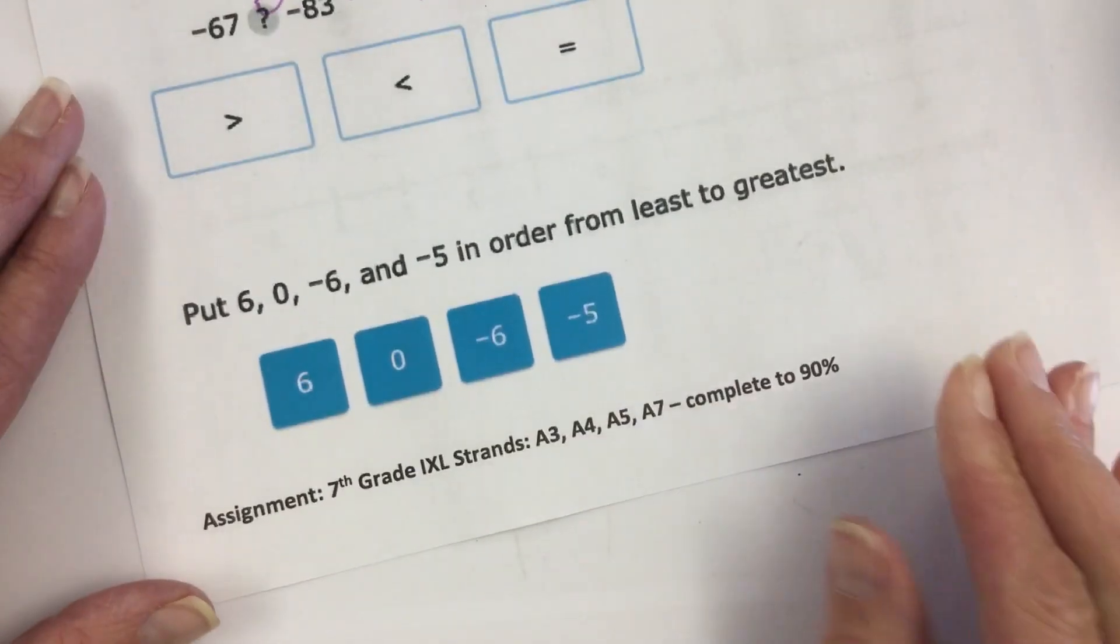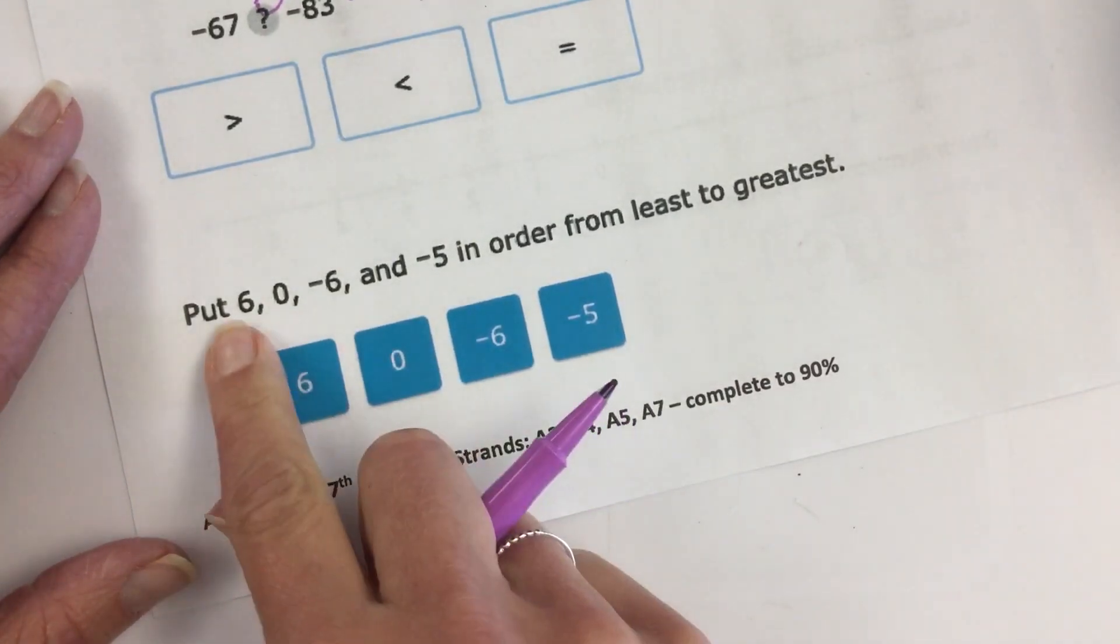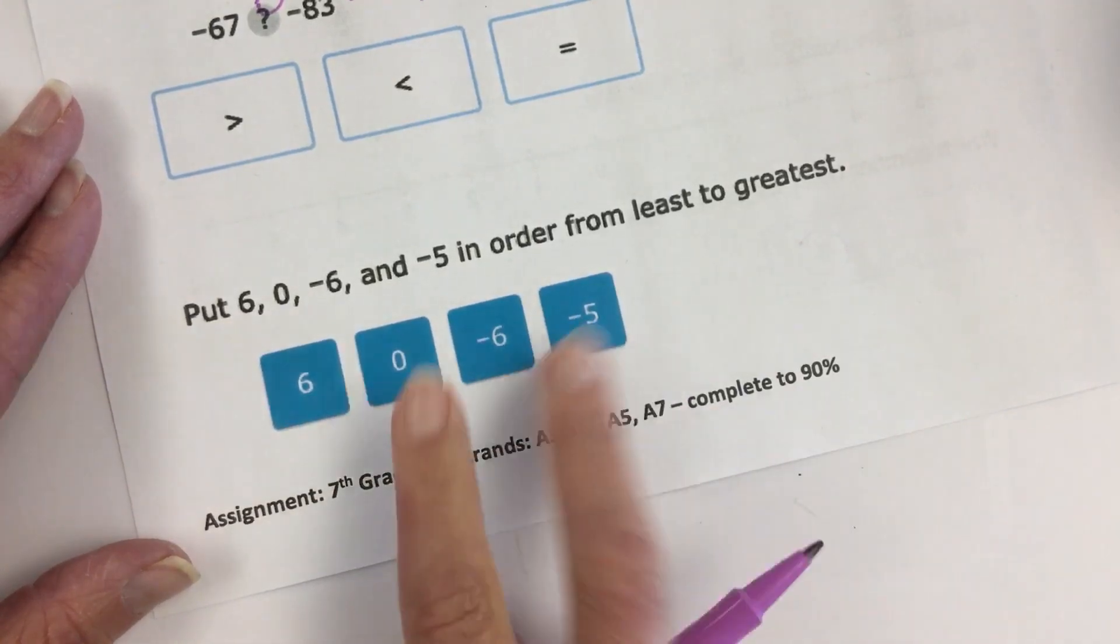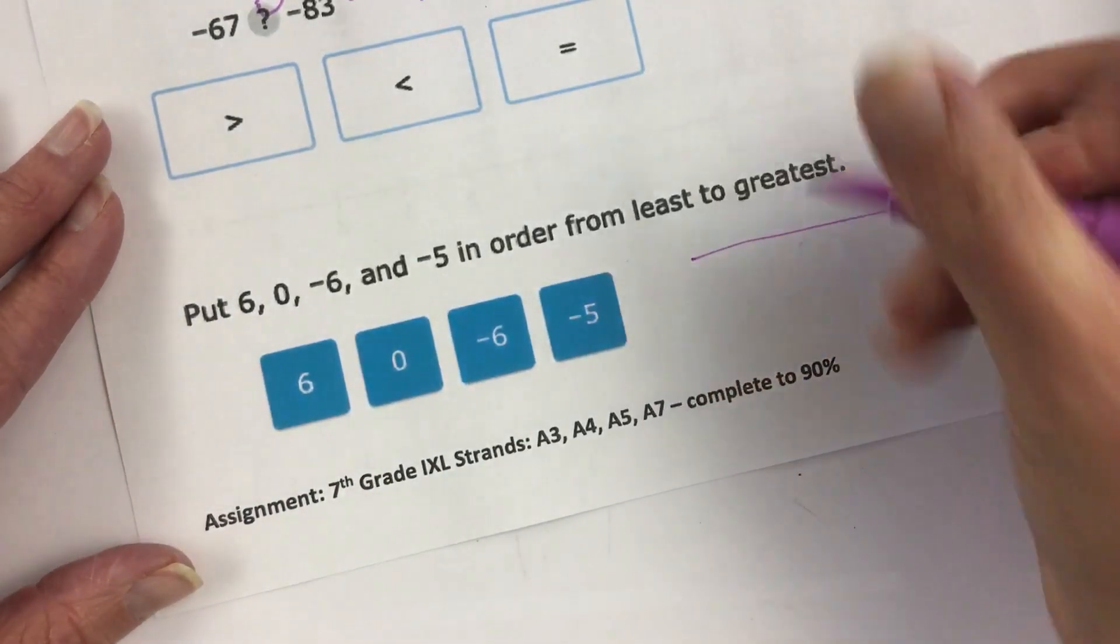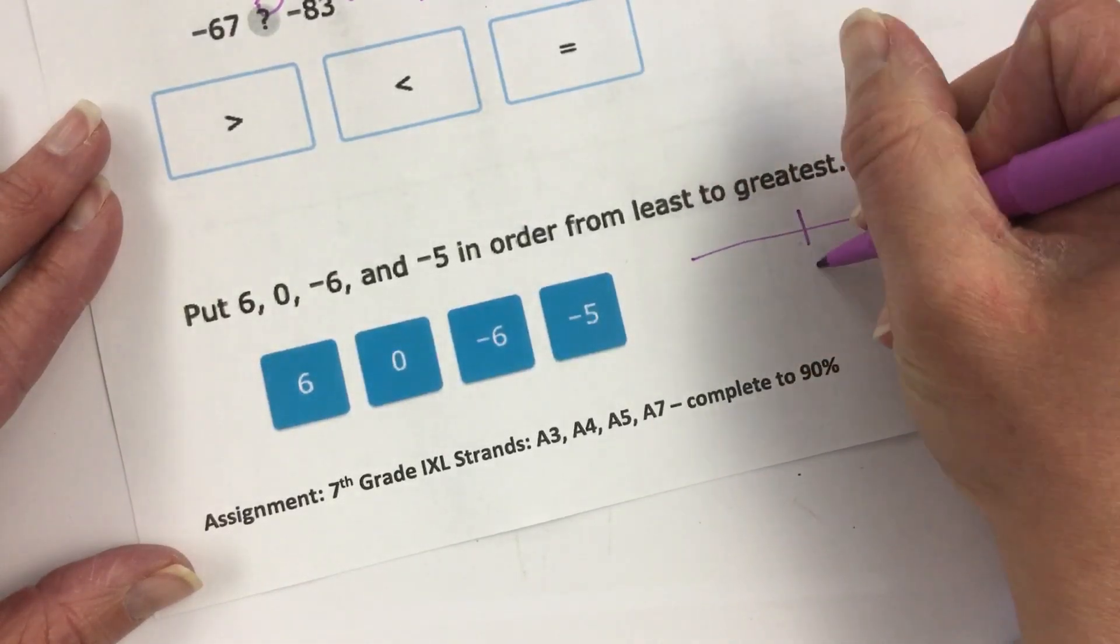The last type of problem I think you guys will see are putting them in order from least to greatest. They have you move these tiles. So if you need to imagine those number lines of yours, we've got zero in the middle.